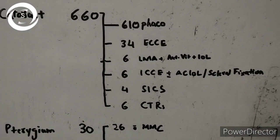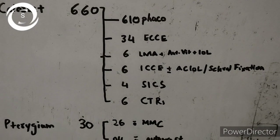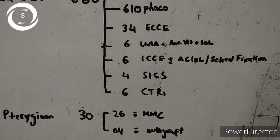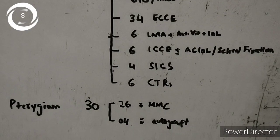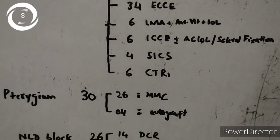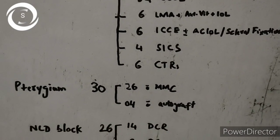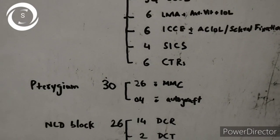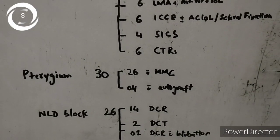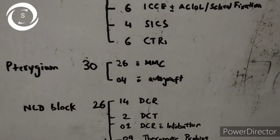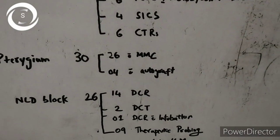Then lacrimal duct obstruction. I performed 26 cases - 14 were routine DCRs, 2 were dacryocystectomies for very old frail patients unfit for DCR, 1 DCR was redo DCR so I put tube, and 9 were therapeutic probing for congenital.